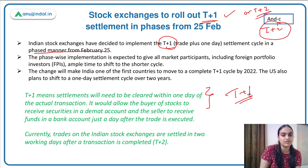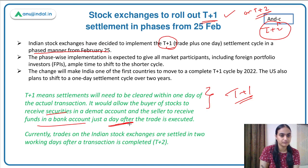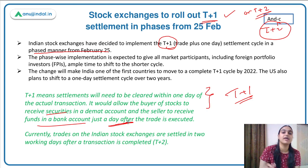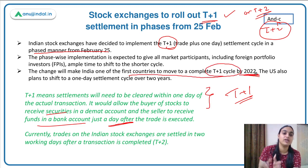Under T+1, if today a transaction is happening, the settlement should take place within one day. The buyer of stocks will receive the securities and the seller the funds in their bank account within one day after the trade. This change will make India one of the first countries to complete a T+1 settlement cycle by 2022, which is a significant achievement for any country.